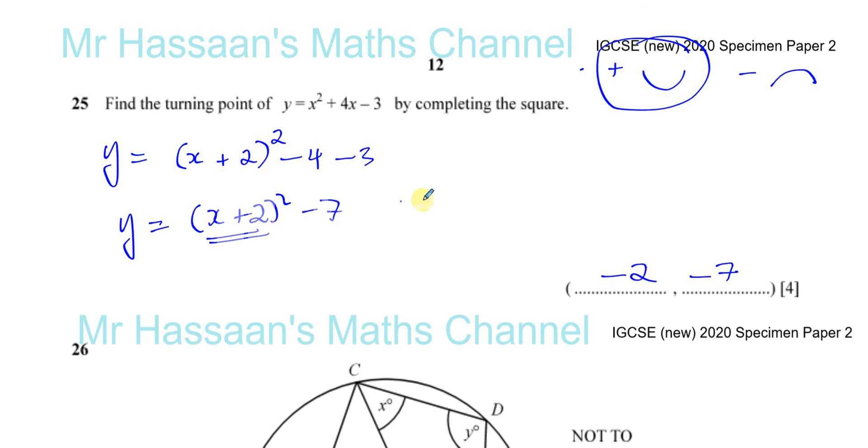Now, some people just memorize the vertex formula. You take the opposite of what's in here. So it's x plus 2, you're going to put minus 2. But that's the actual reason for it—because x equals minus 2 is what causes this bracket to become 0, which leaves you with the lowest value this expression can be, which is minus 7.